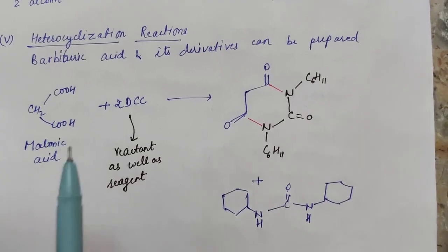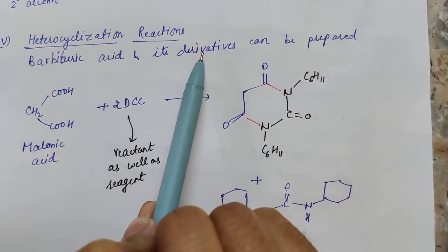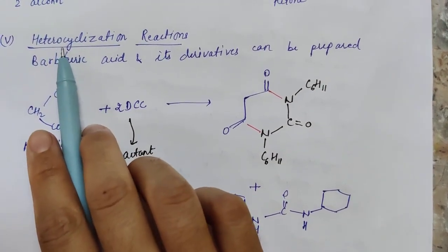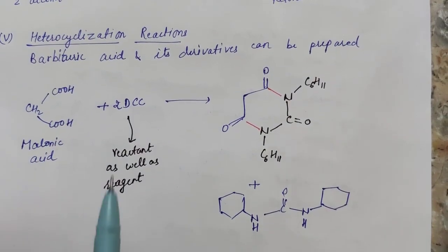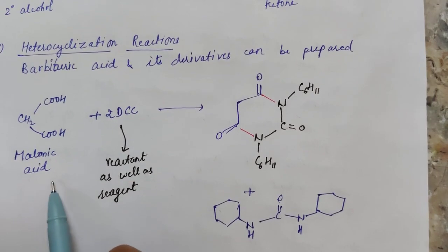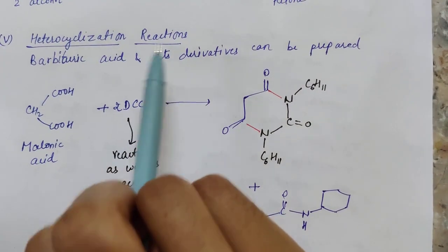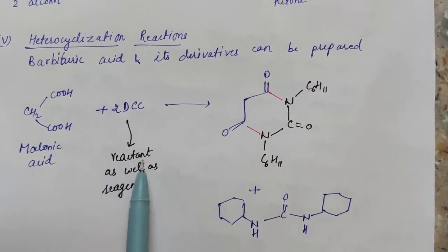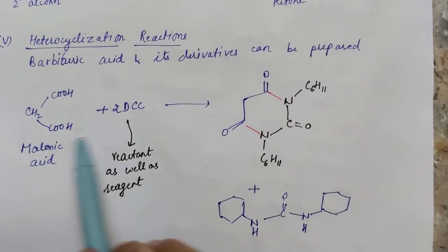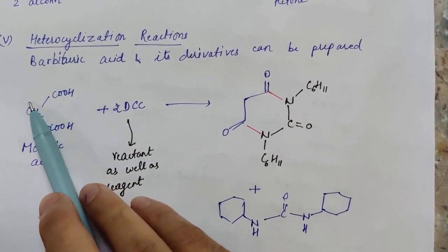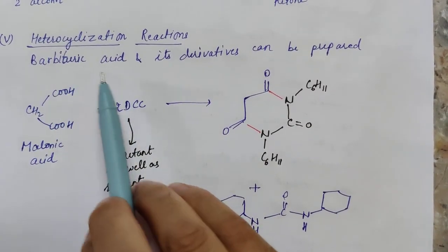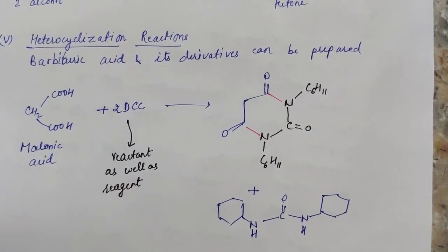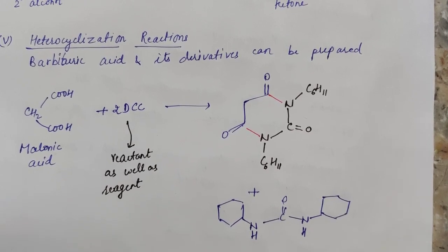The last reaction of DCC is heterocyclization, in which a cyclic product containing a heteroatom is formed. DCC acts as both a catalyst and a reactant in this reaction. For example, malonic acid (or its derivative) reacted with DCC gives barbituric acid and its derivatives. Barbituric acid is used extensively in the pharmaceutical drug industry to synthesize drugs.